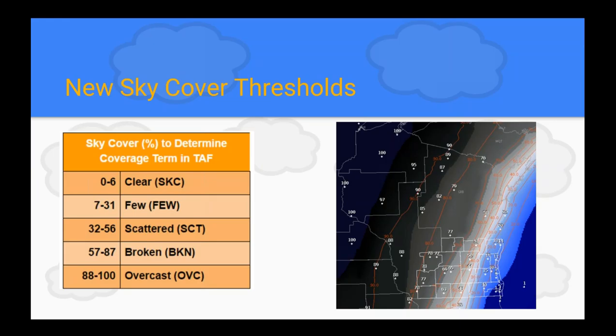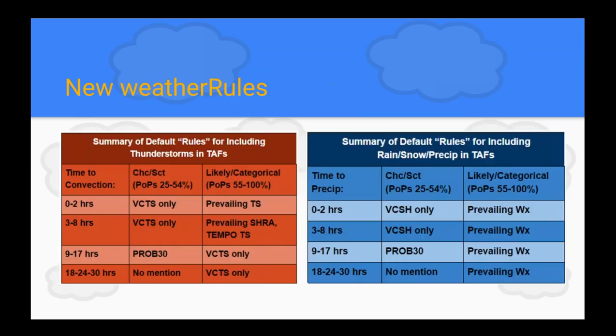Here's the breakdown on screen. As an office, you can update your color schemes for sky cover so that as a forecaster, when you're making sky grids, you'll know what type of coverage you'll be getting in your TAF formatter. We're also getting new weather rules built into the TAF formatter. The weather rules determine how thunderstorms are put into the TAF, or how other precipitation like rain and snow showers are put into the TAF.